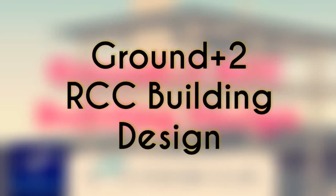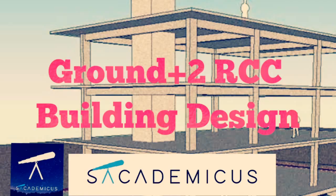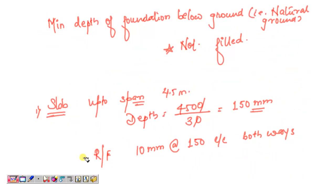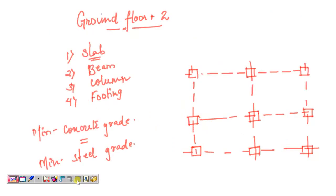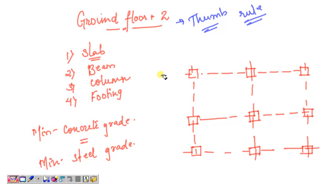Welcome to SQR Makers. In this lecture I will be explaining the design of a G+2 RCC building using thumb rule. I have received many requests regarding this topic. I have already uploaded a G+1 RCC building using thumb rule and a G+6 RCC building design using STAAD Pro with complete analysis, design, and detailing in AutoCAD. In this video the G+2 building design will be based on general thumb rule and experience.